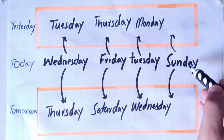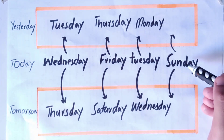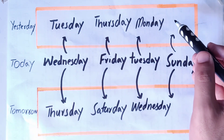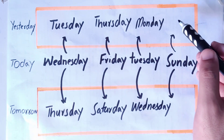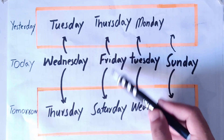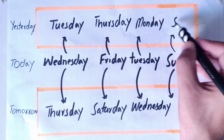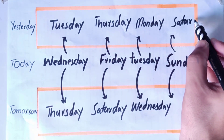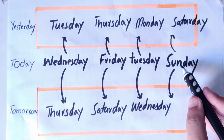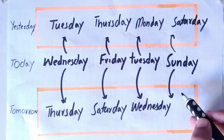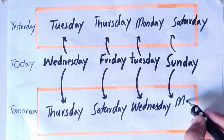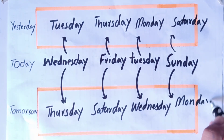And suppose today is Sunday. So what will be yesterday? Yesterday was Saturday. So here we say Saturday, and today is Sunday. So tomorrow will be Monday.